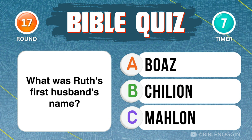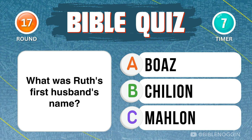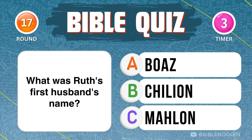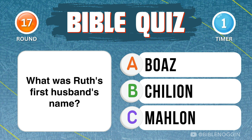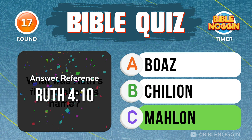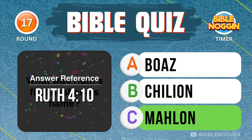Question 17: What was Ruth's first husband's name? Mahlon — found in Ruth chapter 4, verse 10.